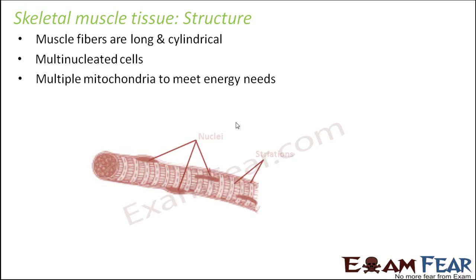If you look at the structure of the skeletal muscles, you can see the striations — the striped structures. Because of these striations, they are called striated muscles. You can also see multiple nuclei at the ends. That covers the structure of skeletal muscle tissue.